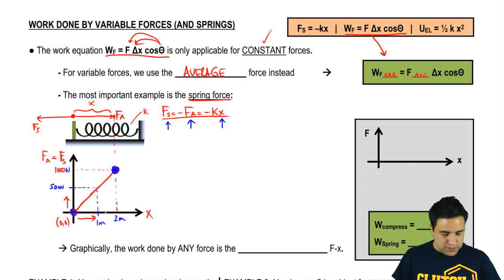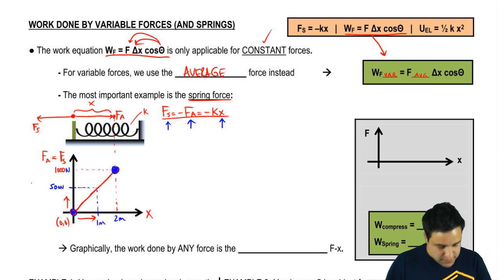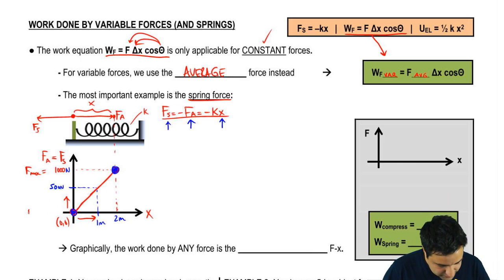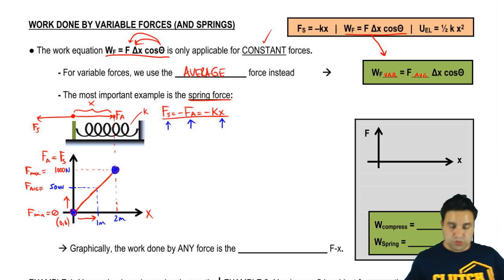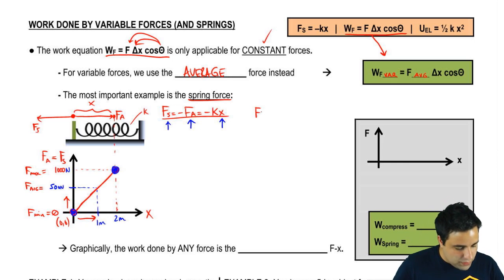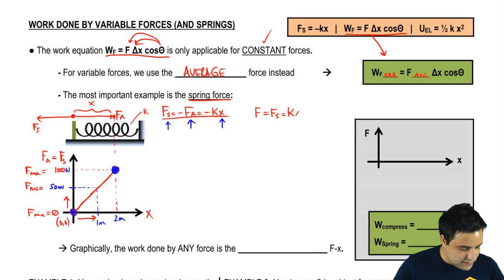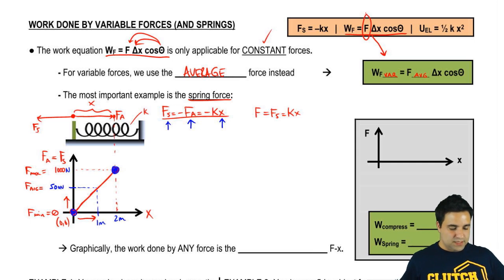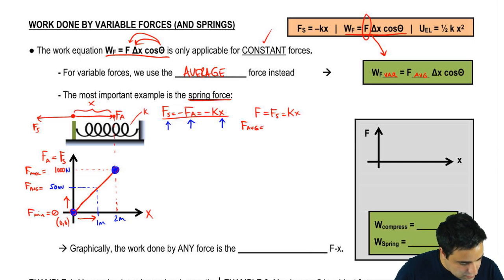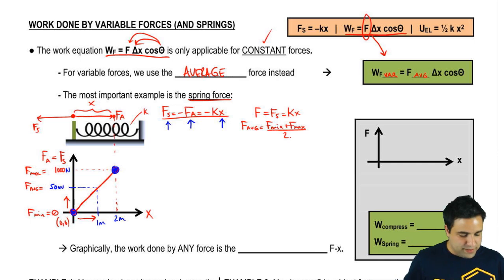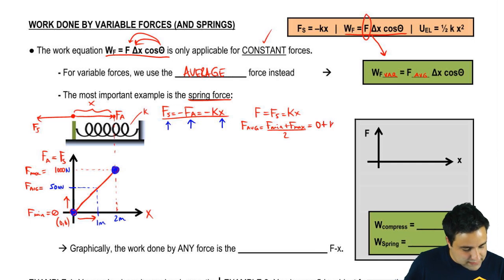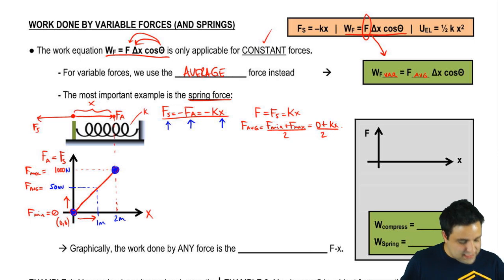This is the force maximum, and the force minimum is zero. The force average is just the midpoint between the two. The force of the spring is kx, so the average force is the average of the minimum and maximum: (0 + kx) / 2, which gives kx over 2.